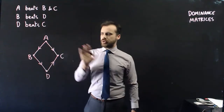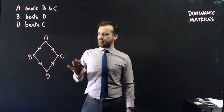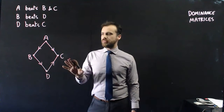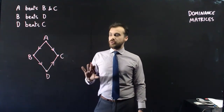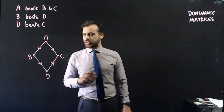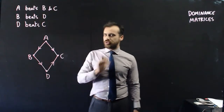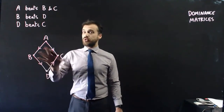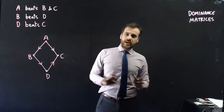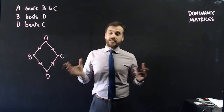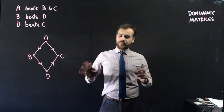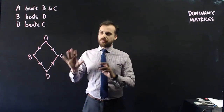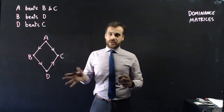So now we have this little network. You can probably pause and think about who the best team is, who the worst is, and maybe second and third. But imagine if this wasn't four teams — imagine 20 teams each playing 15 games. That network gets really out of control, so we need a better way: drawing up a matrix.